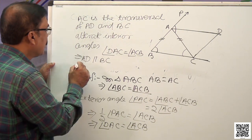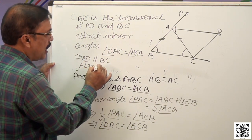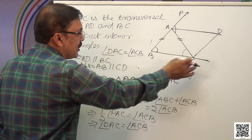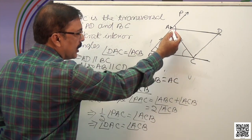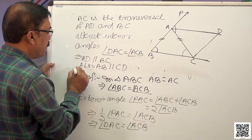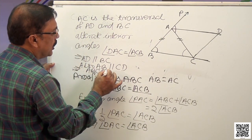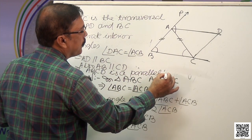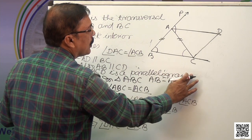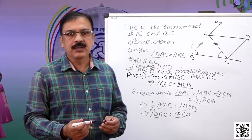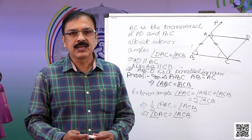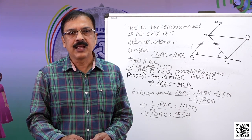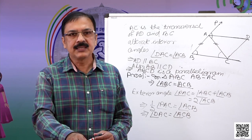We are also given that AB is parallel to CD. So in quadrilateral ABCD, AD is parallel to BC and AB is parallel to CD. Therefore ABCD is a parallelogram. By using the property that opposite sides of a parallelogram are parallel, we have proved that ABCD is a parallelogram.